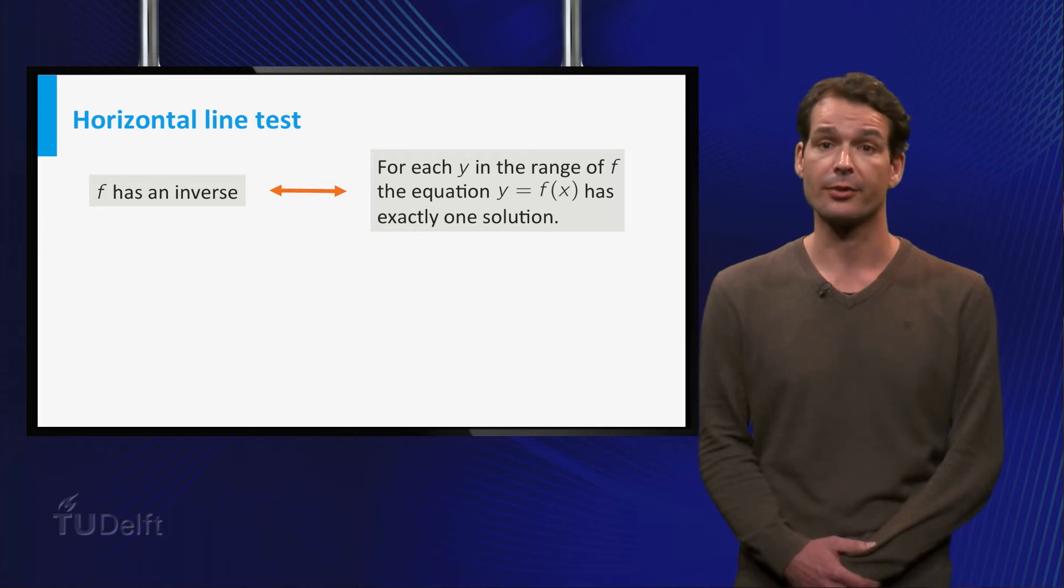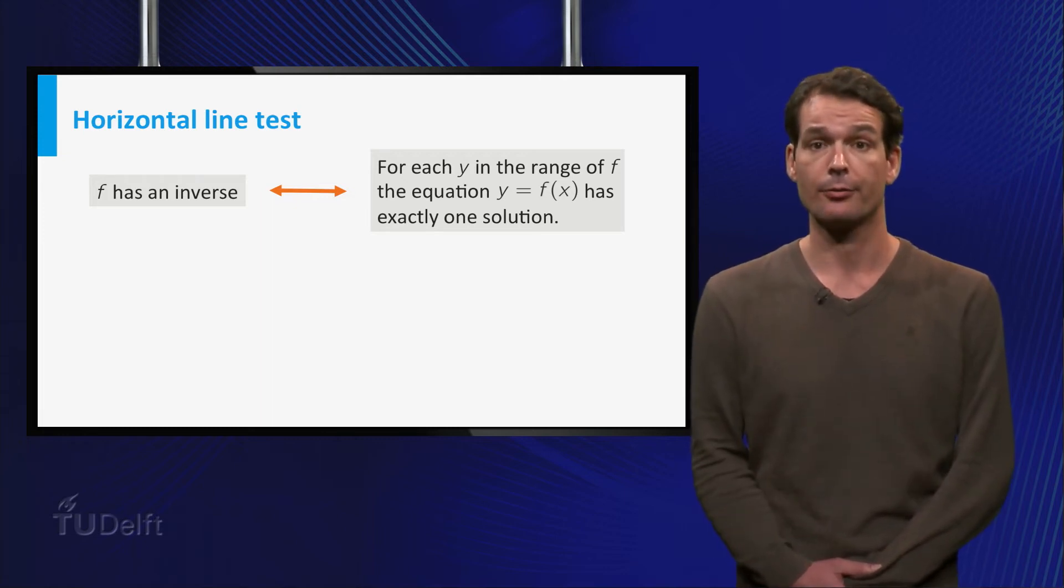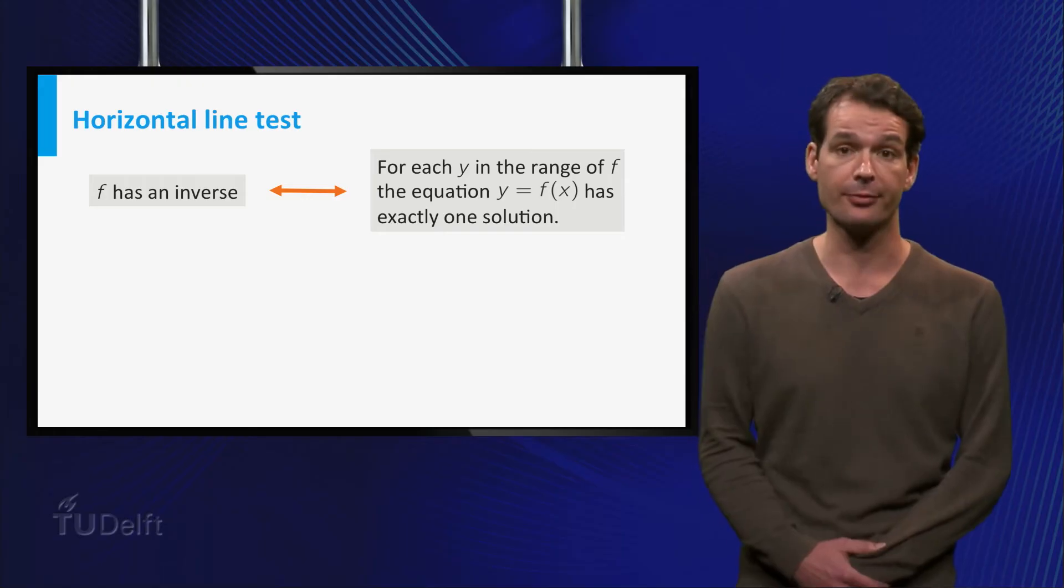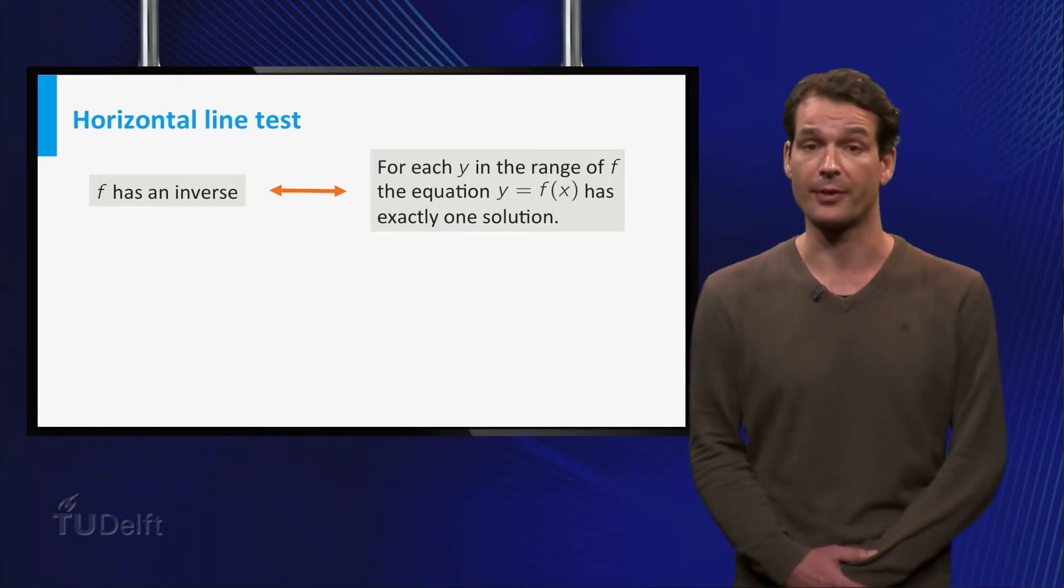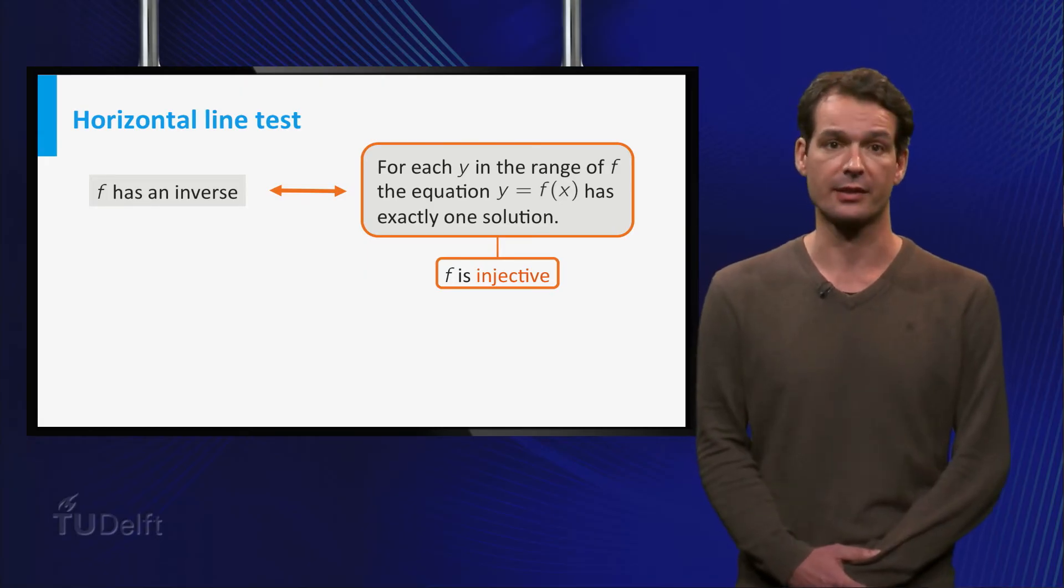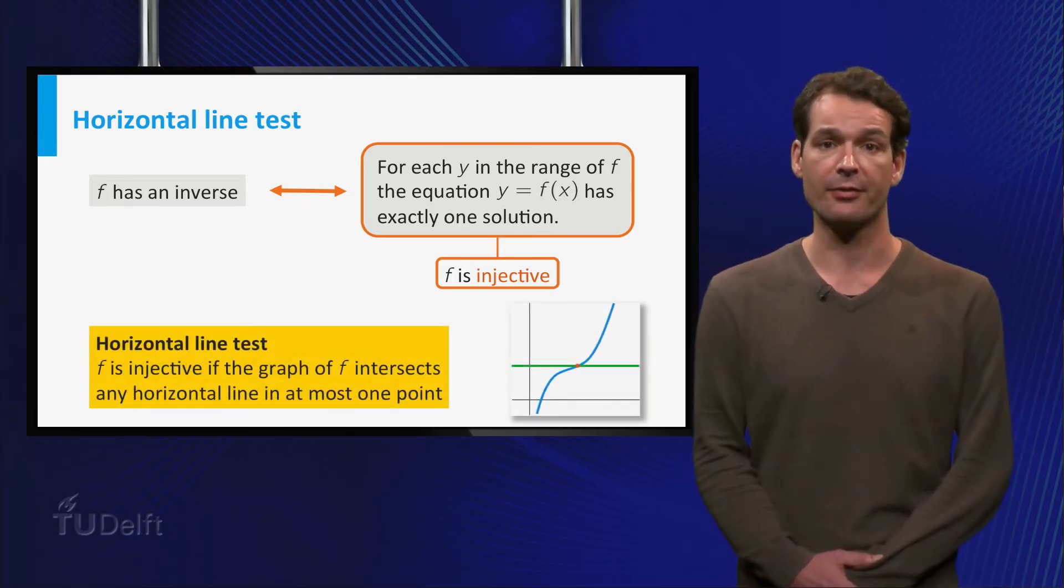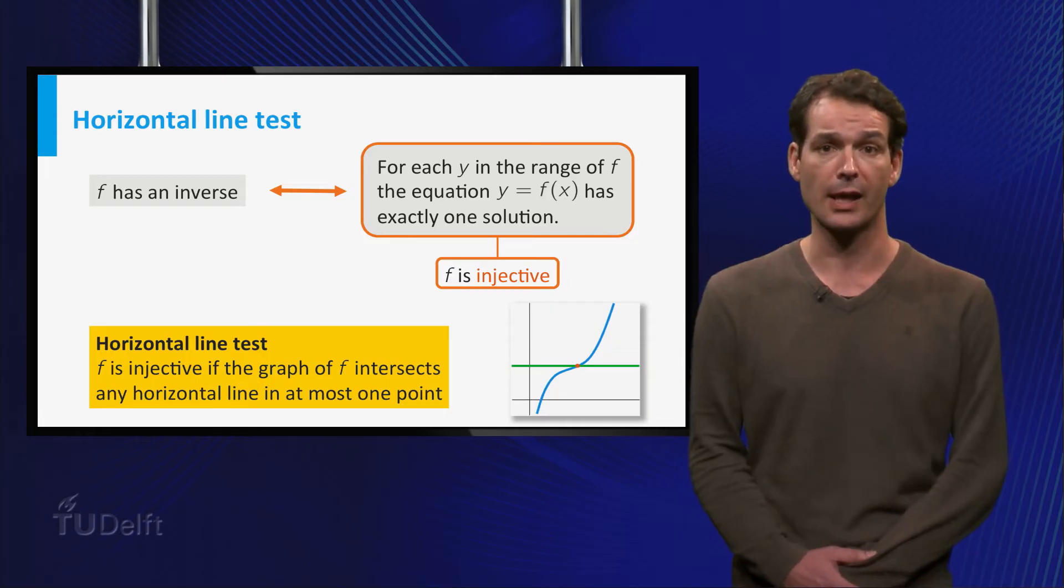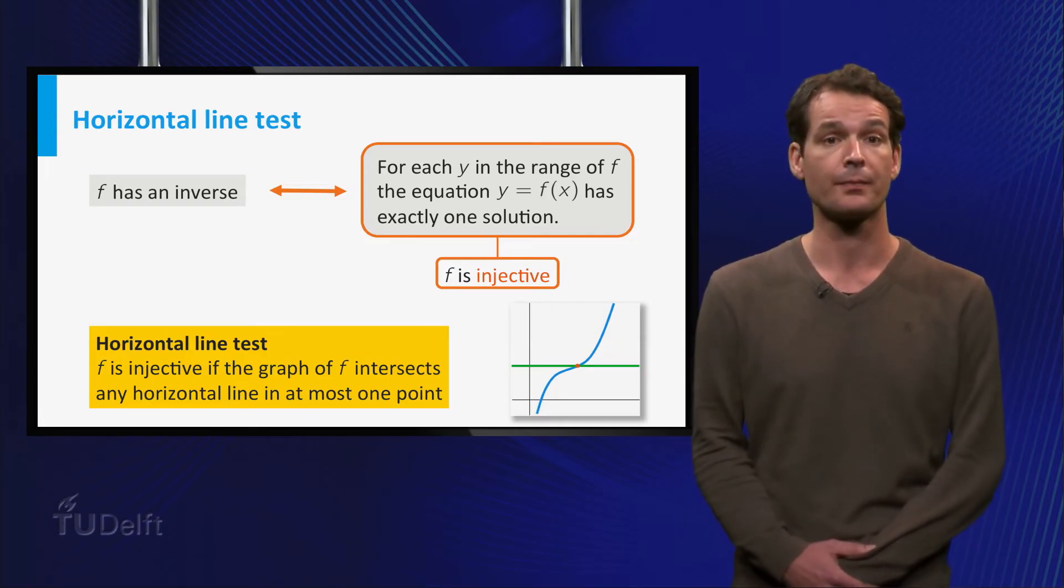We see that the function F only has an inverse if, for each Y in the range of F, the equation Y equals F of X has exactly one solution. Functions with this property are called injective. There is an easy way to see if a function is injective. The graph of F must intersect any horizontal line in at most one point. This is called the horizontal line test.